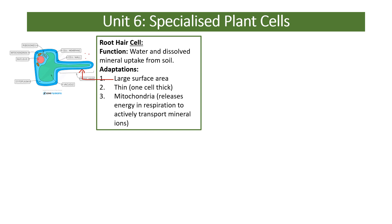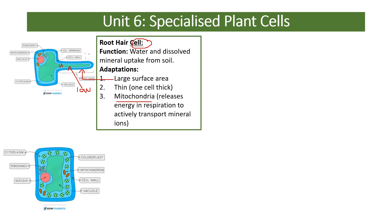The root hair cell is only one cell thick, which is why it's called a root hair cell — the whole structure is one cell. It has mitochondria because minerals have to go from a low concentration in the soil to a higher concentration in the plant, which requires active transport, and active transport uses mitochondria.